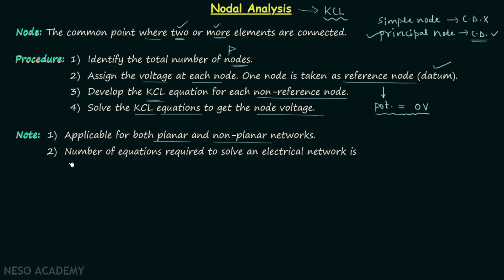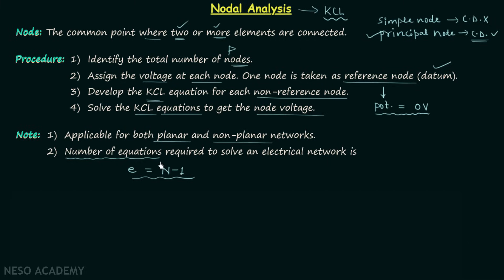Point number two is related to the number of equations required to solve an electrical network using nodal analysis. If E is the number of equations, then E equals n minus 1, where n is the number of nodes. Remember this formula.